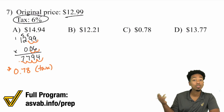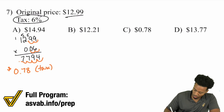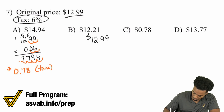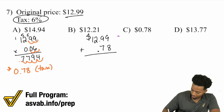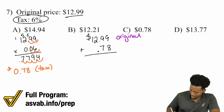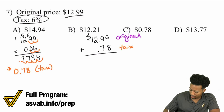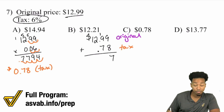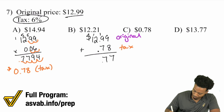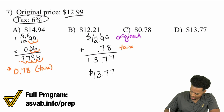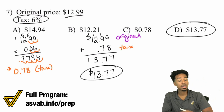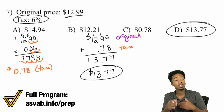We have about 78 cents in tax — when dealing with money, two decimal places is all you need, so round anything after that. Now we take $12.99 and add $0.78. Adding: 9+8=17, 9+7 carry 1=17, 2+1=3, 1+1=1... giving us $13.77 as the final price after tax.